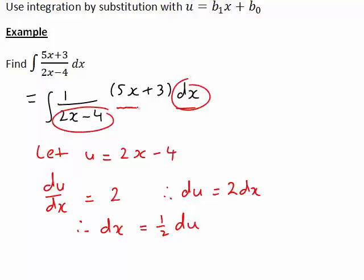But we still have this 5x plus 3 part, which will need to be written in terms of u. In order to do that, we saw that u was equal to 2x minus 4. So the strategy here is to rearrange that expression for u to make x the subject. Then once we have done that, we can substitute in our expression for x, which will give that 5x plus 3 rewritten in terms of u.